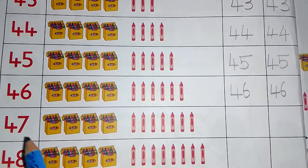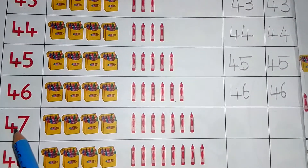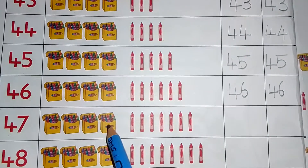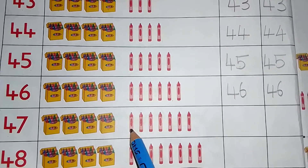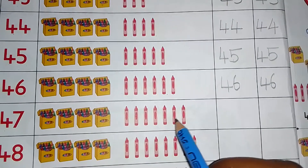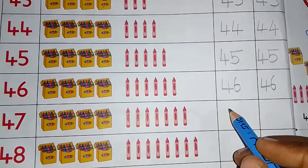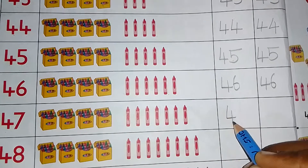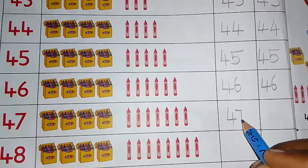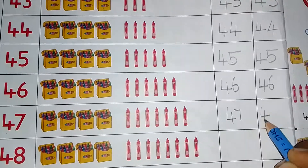Next number 47. 47. 10, 20, 30, 40, 41, 42, 43, 44, 45, 46, 47. We write 47. Write 4, after that write 7. 4, 7. 47.